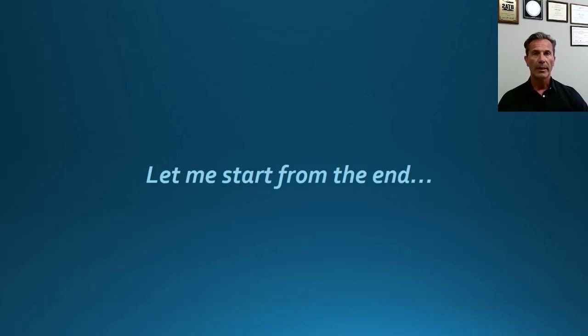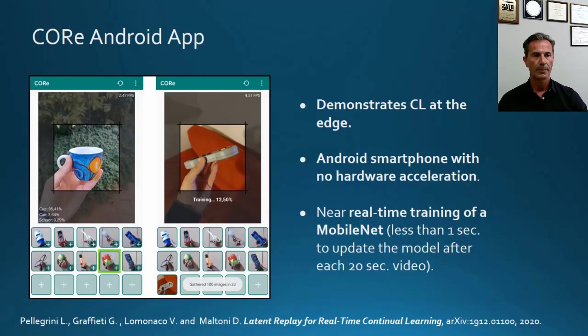To better explain our aim and motivation, I prefer to start this presentation from the end of the story by showing you an application that we developed. It's an Android application for a smartphone with no hardware acceleration, running on CPU. This application is able to train a MobileNet in near real-time starting from short video of about 20 seconds. You can load this video from a provided link, and if you want, you can also download the application and install it on your Android smartphone.